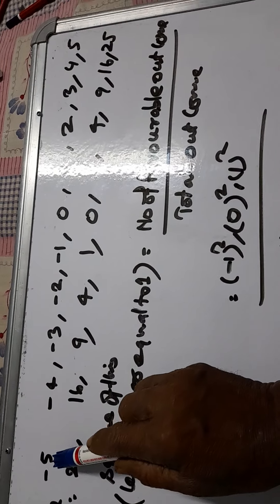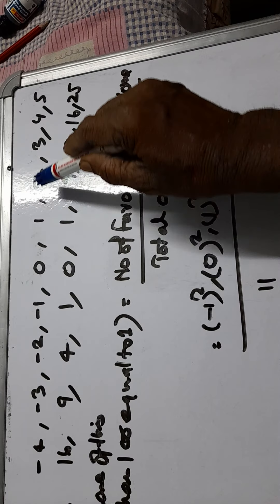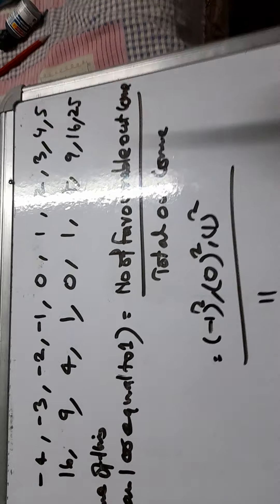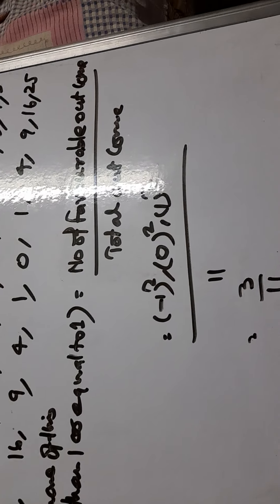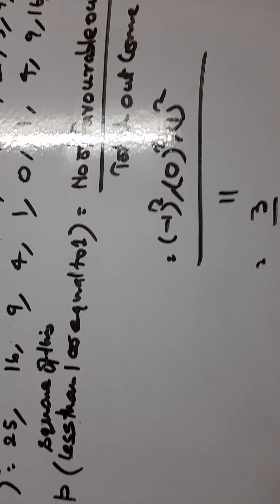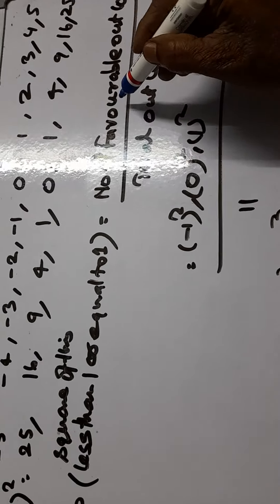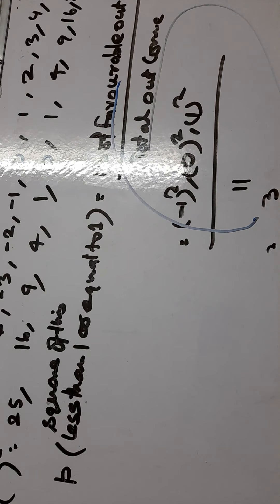And total outcome is 1, 2, 3, 4, 5, 6, 7, 8, 9, 10, 11. So number of favorable outcomes is 3 and total outcome is 11.